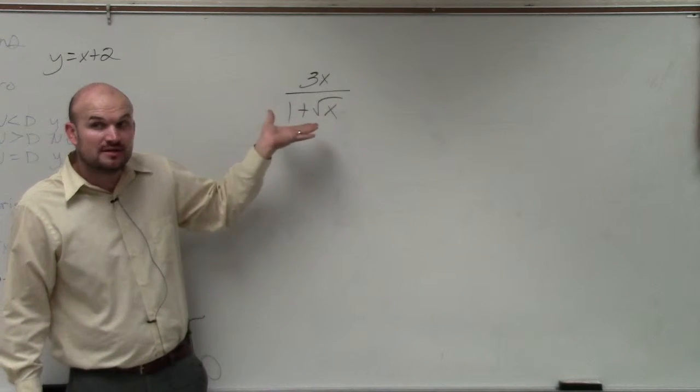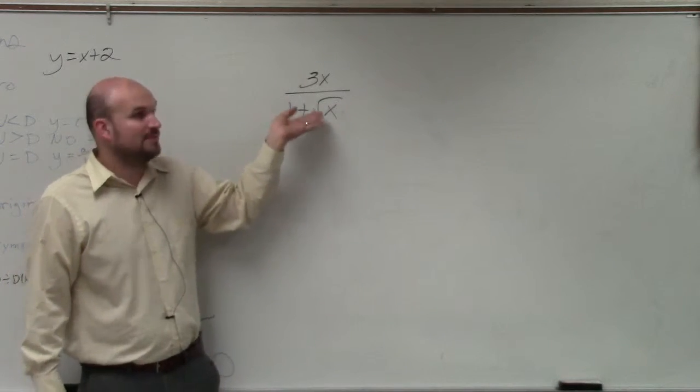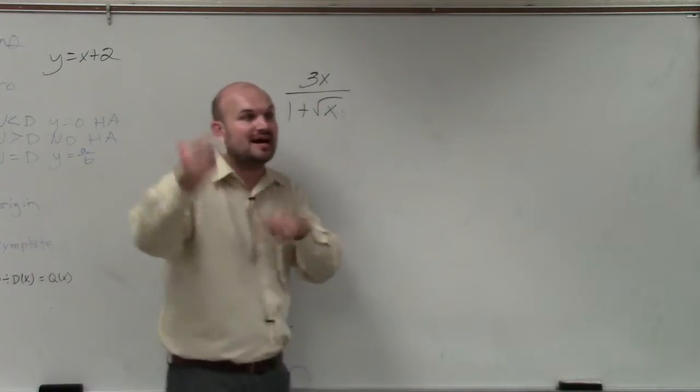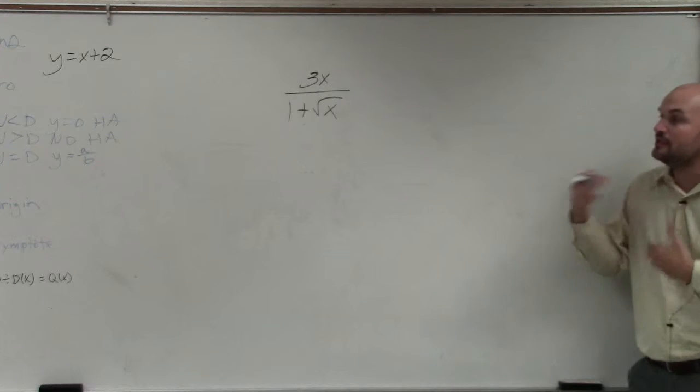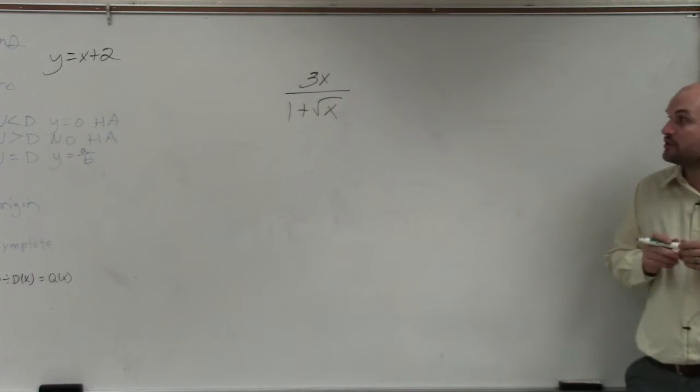You guys were given zeros, right? You remember we were given zeros like 1 plus square root of x, and then you had to use the conjugate and multiply them. Multiplying square roots is something you've done for your homework.